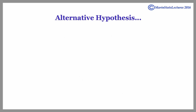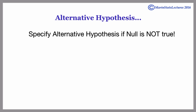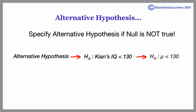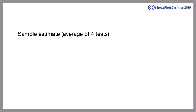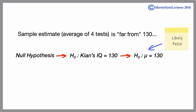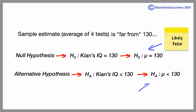We must have some alternative hypothesis in the event that we're not convinced our null is true. Our alternative hypothesis may be that Kyan's IQ score is actually less than 130. This is what we call a one-sided alternative. The alternative hypothesis may also be two-sided, but we'll save a discussion of one-sided versus two-sided alternatives for later. If our sample estimate — the average of the four IQ tests — suggests that our null hypothesis is likely false, then we will have evidence to believe that our alternative hypothesis is likely true.